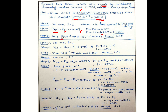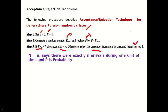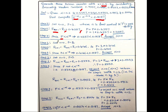In step 3, since p = 0.4357 is less than e raised to minus alpha (0.8187), this condition is satisfied. We accept that random number. Therefore n equals 0. This is the first Poisson random variate generated.